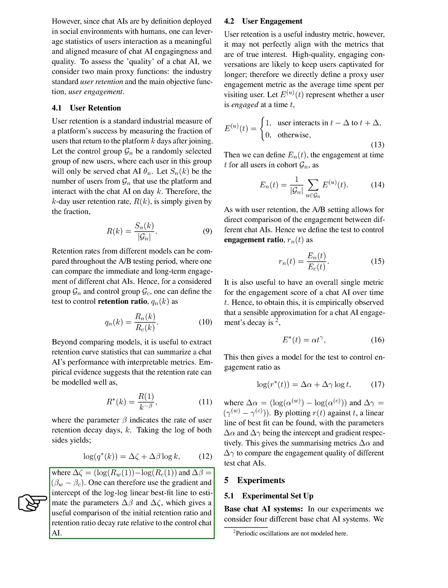User engagement. Let's talk about user engagement. While user retention is a valuable measure in the industry, it might not always align with the metrics that truly matter. Engaging, high-quality conversations are likely to hold users' attention for longer. So, we use a proxy metric for user engagement, which is the average time a user spends on the platform per visit. We use a symbol, E(U,T), to denote whether a user is engaged at a certain time T. We then define E(N,T), which represents the engagement of all users in a group, G_N, at time T.